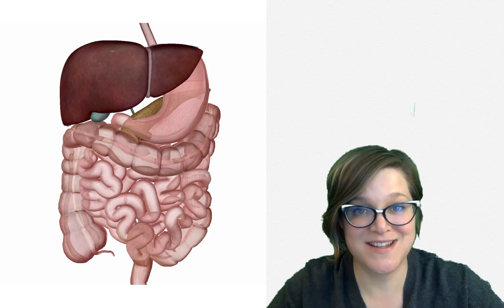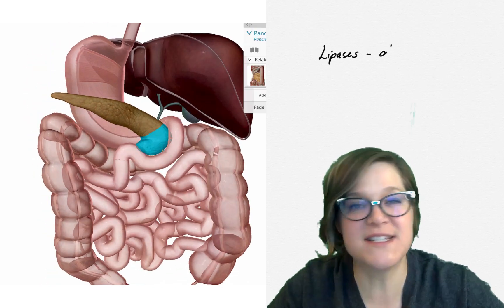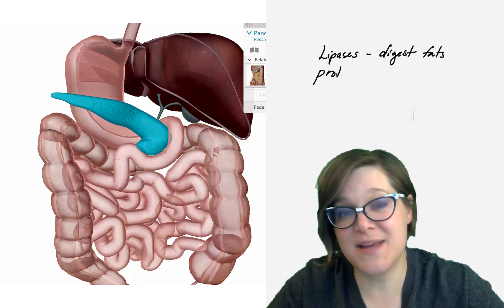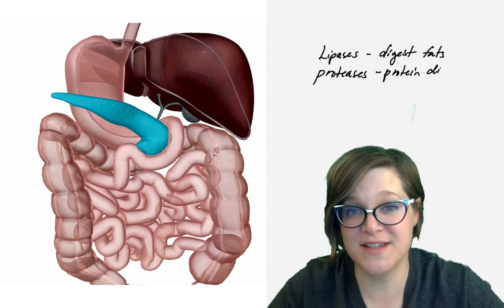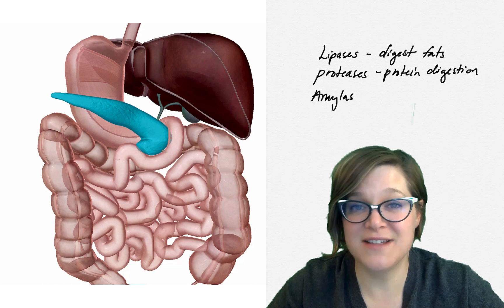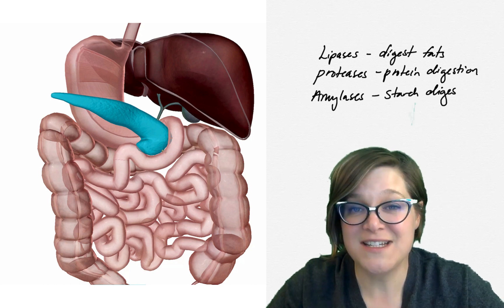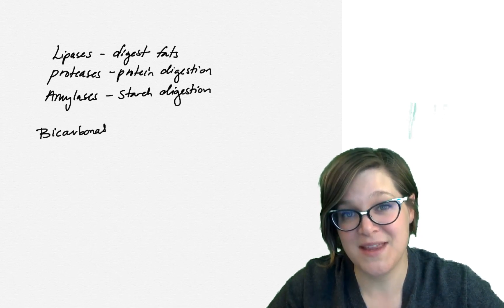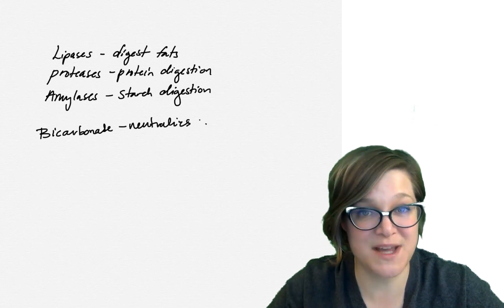So let's move on to the next digestive accessory organ, the pancreas. The pancreas secretes several things that help with digestion. Some of these are enzymes. Examples of these enzymes would be lipases, which digest fats, proteases, which break down proteins, and amylases, which break down starches. In addition to releasing these enzymes, the pancreas also releases bicarbonate. The bicarbonate is used to neutralize the acid that comes from the stomach.